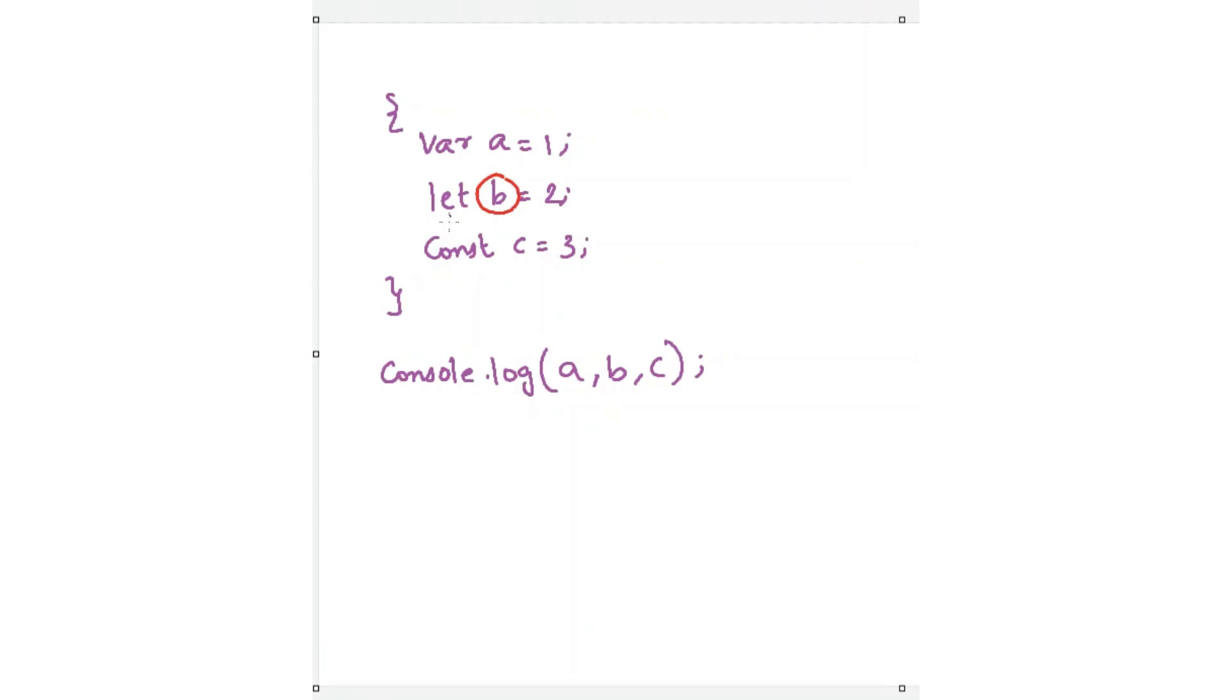Whereas here, we are declaring the variables by using let and const keywords. In JavaScript, variables declared with let and const are block scoped. So they cannot be accessed outside this particular block.